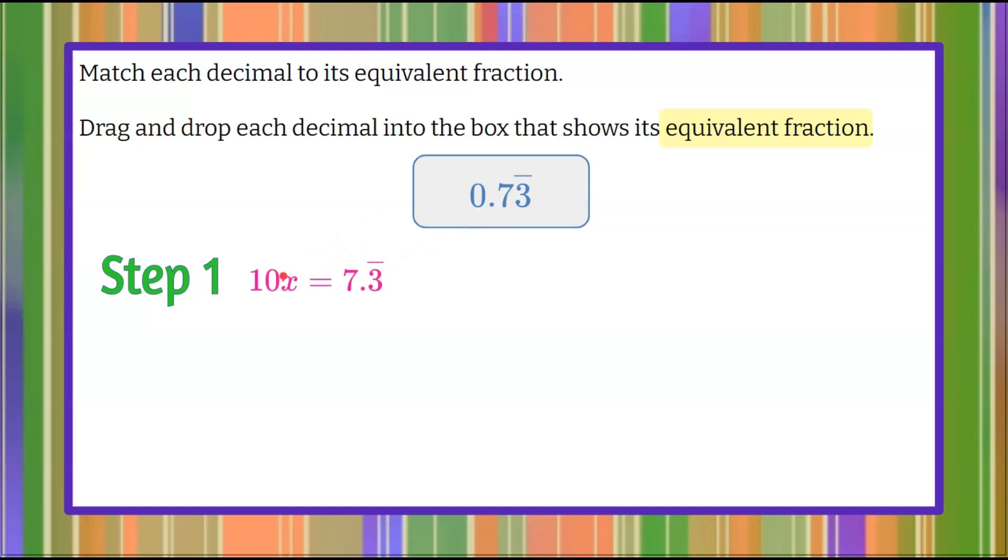So let's think: if x is equal to this and I multiply both sides by 10, 10x equals 7.3 repeating. So in step 2, I want one of those repeating digits to the left of the decimal point in step 2. So I'm going to multiply both sides by 100, which means I would move the decimal point two spaces to the right. So 100x equals 73.3 repeating.